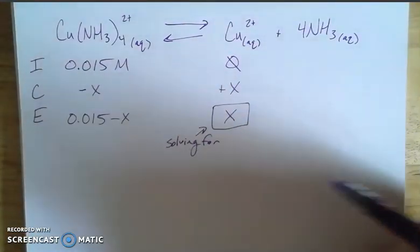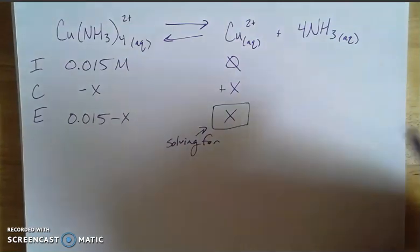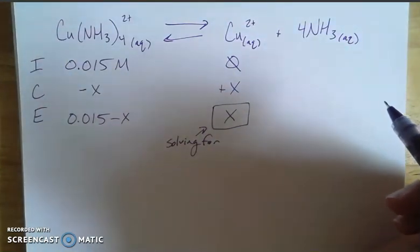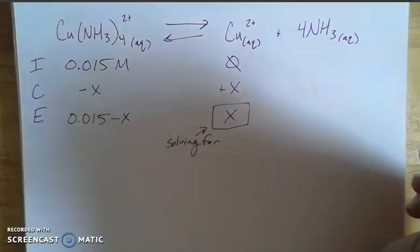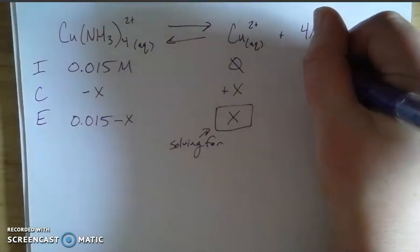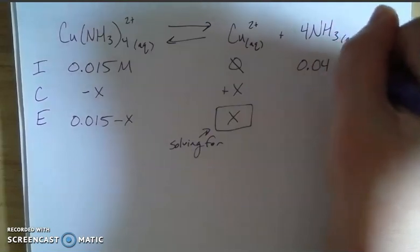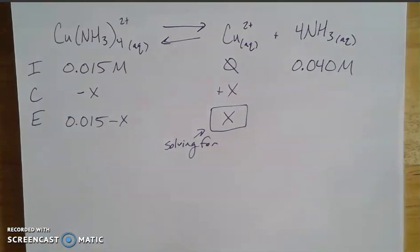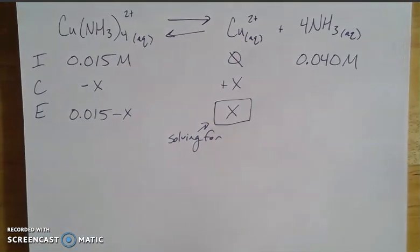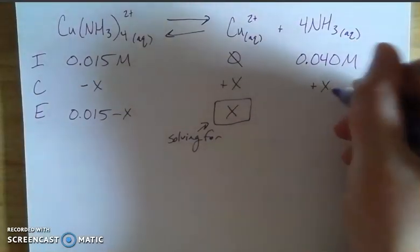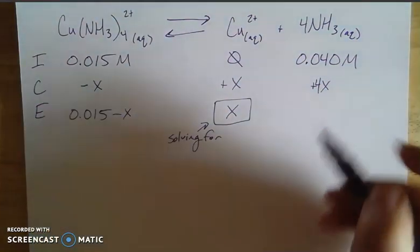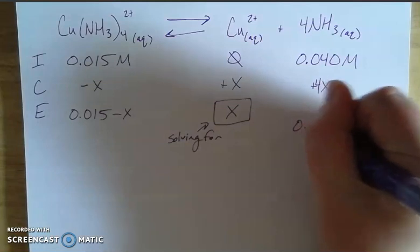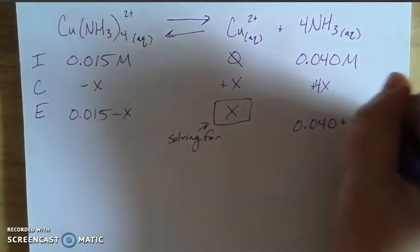Now with ammonia, this is kind of a common ion effect problem, although ammonia is not an ion, but it's a common element or common compound effect, that when I started off, I still had some excess ammonia in there. And that's going to factor into my problem solving. So I had 0.040 molar ammonia left over. And we have 4 because of our molar quantity there. So at equilibrium, I have 0.040 plus 4X.